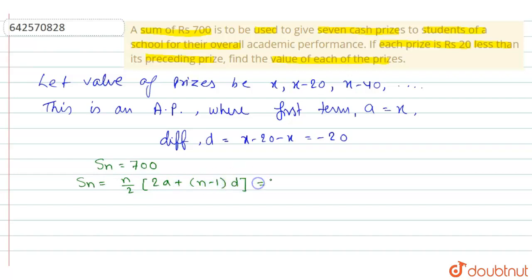So this implies n by 2 is 7 by 2 into 2 into x for A plus 7 minus 1 into D is minus 20.